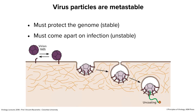A very important concept: virus particles are metastable. What does that mean? It means they have two different states. They have a stable state — to protect the genome they have to be stable and can't fall apart. But once the virus gets into the cell, it has to come apart and let out the genome, so it has to be unstable at some point in its reproductive cycle. That's what I mean by metastable.